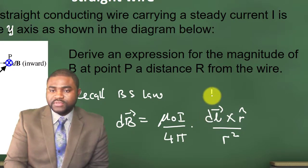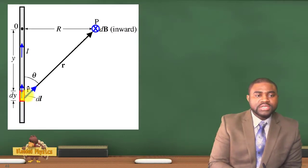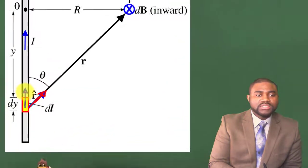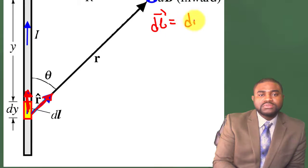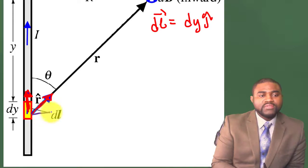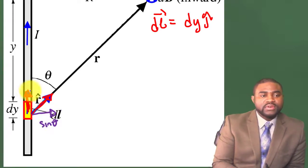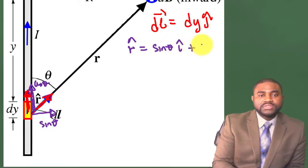we need to know our current element and our unit vector. If you look at this diagram, you will identify the following: dl is equal to dy ĵ. We can express our unit vector in terms of î and ĵ. The component of î in this direction will be sinθ. So r̂ is equal to sinθ î plus cosθ ĵ.